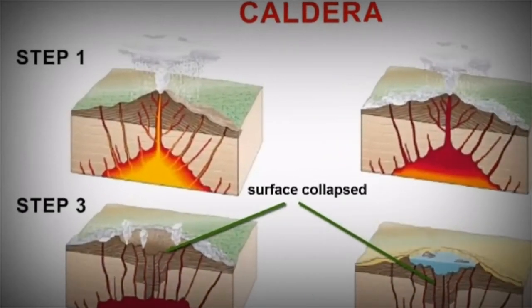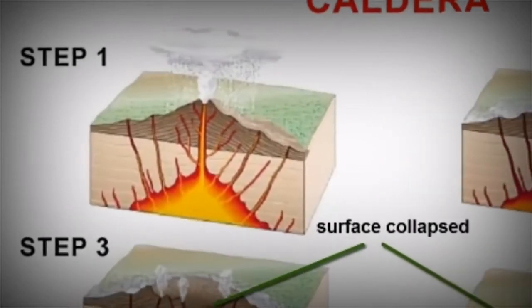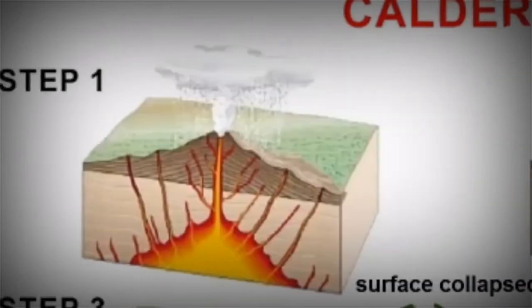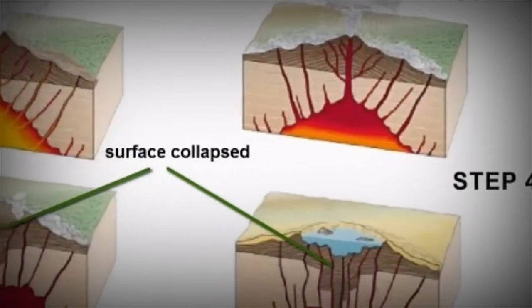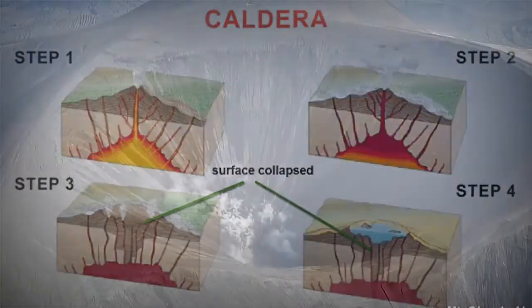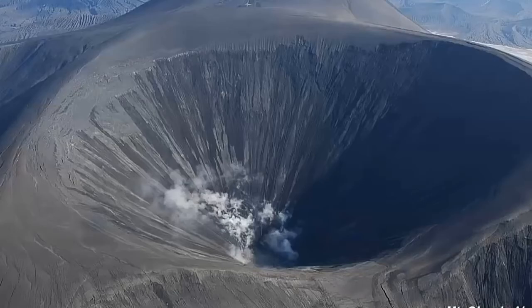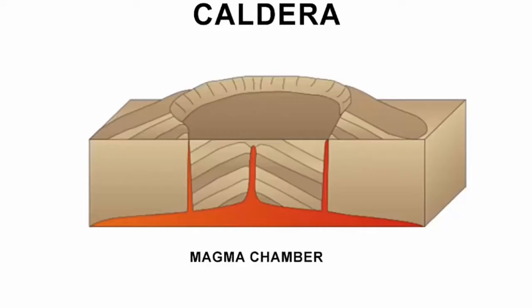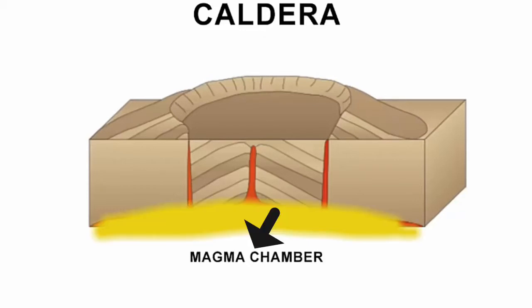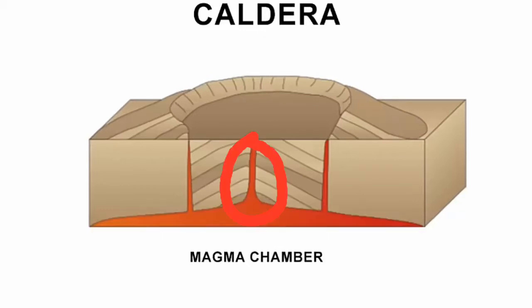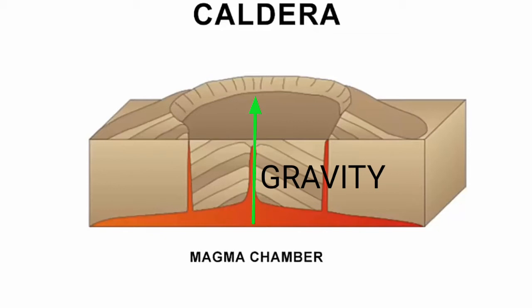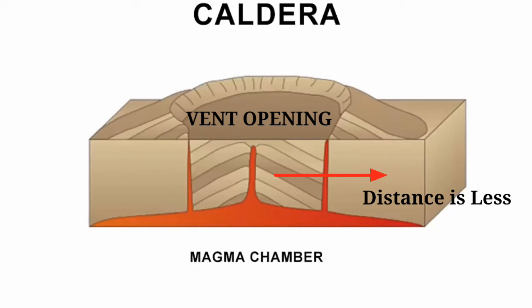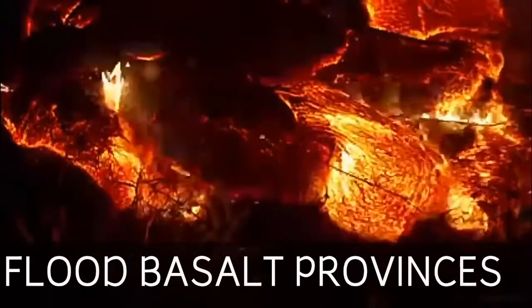The next type is the calderas. These types of volcanoes are characterized as the most explosive volcanoes. They are so explosive that when they erupt, they tend to collapse on themselves rather than building any tall structures. The collapse depressions are called calderas. The explosive nature indicates that the magma chamber is not only huge but is also in close vicinity with the vent opening, because gravity will not allow the lava to go very high.